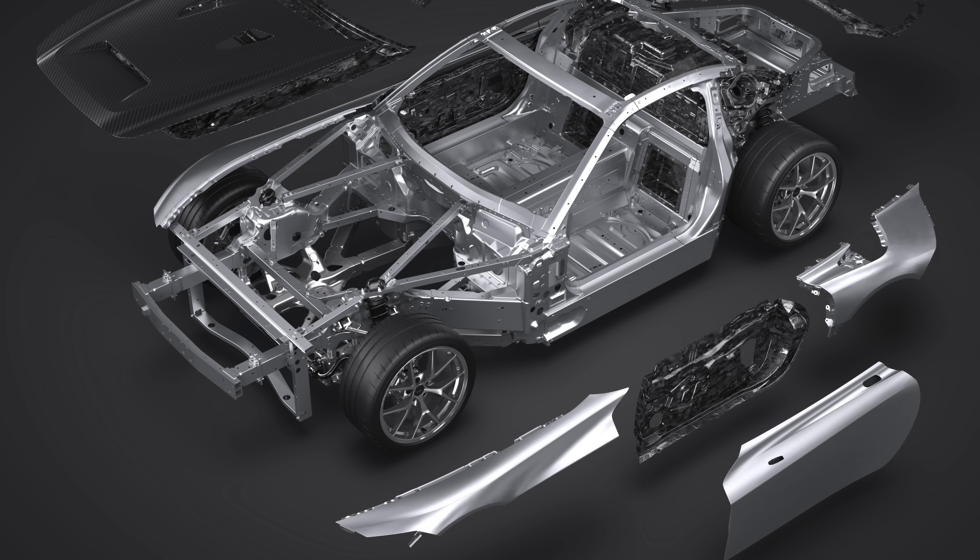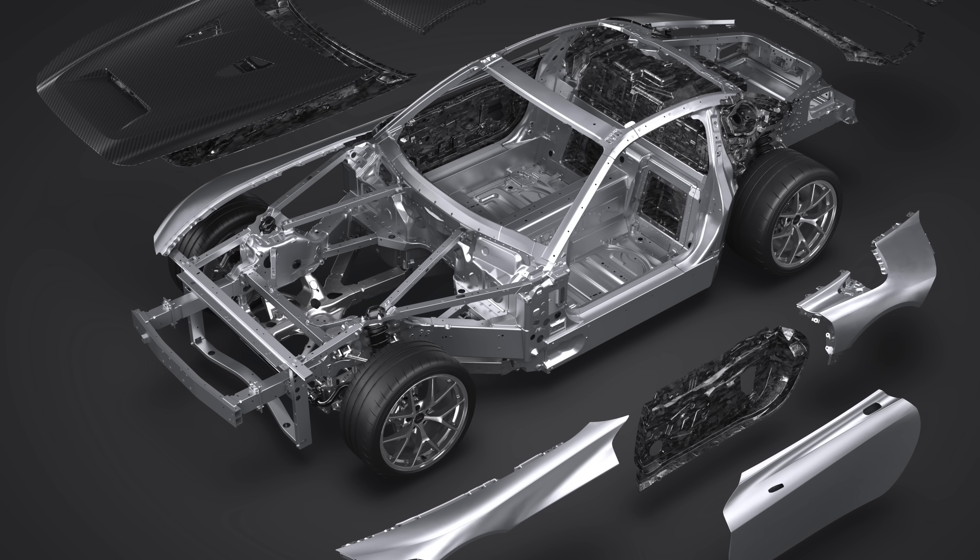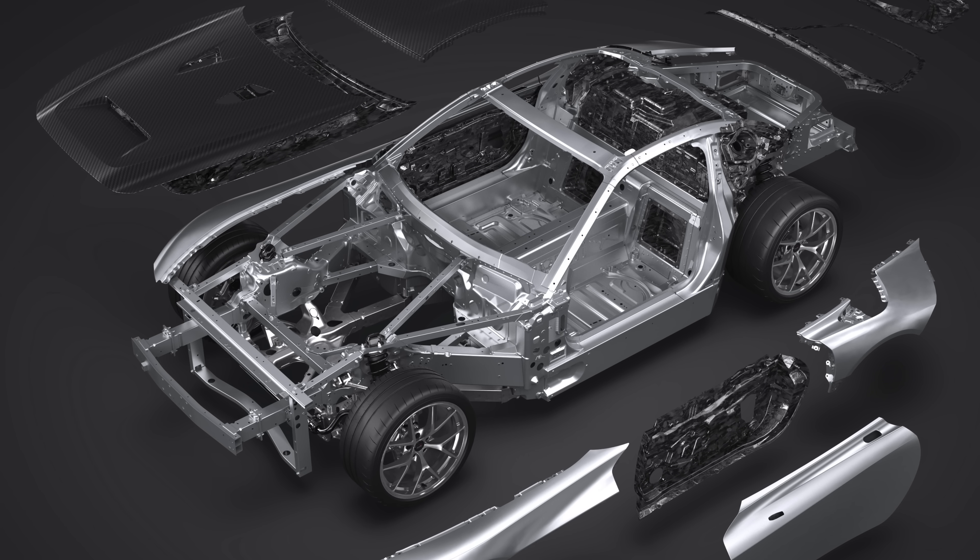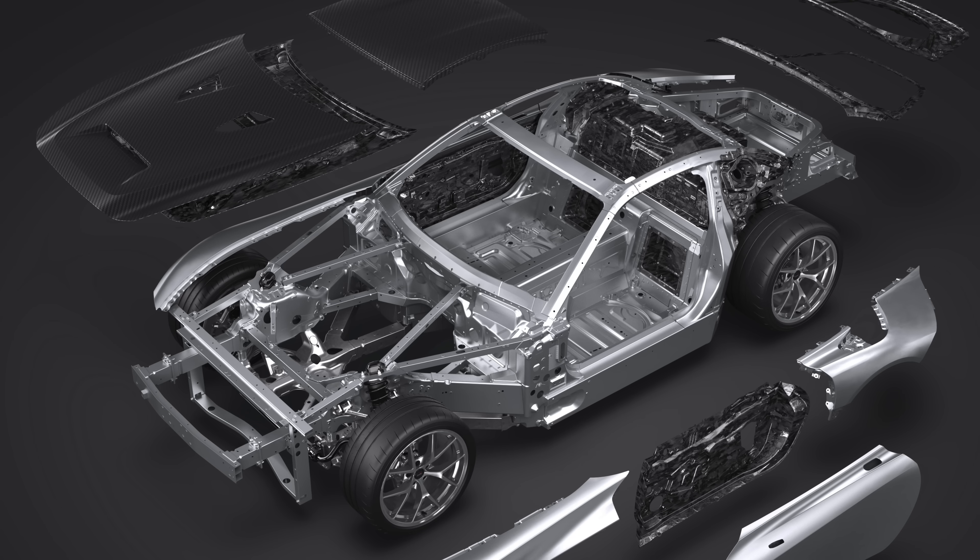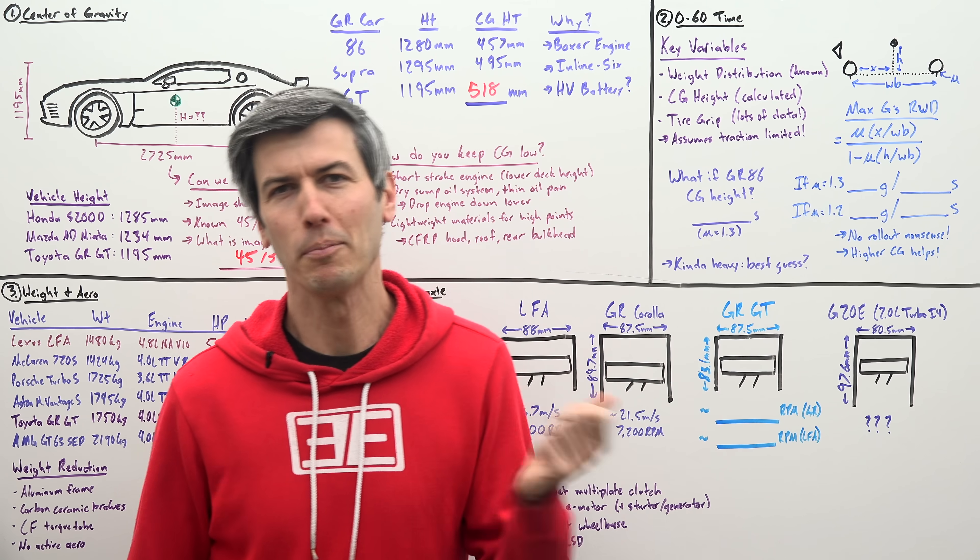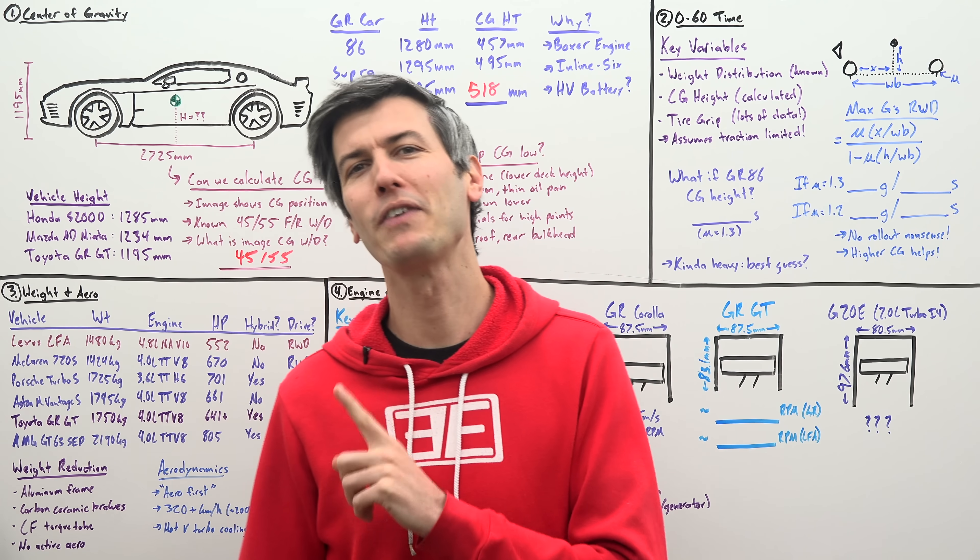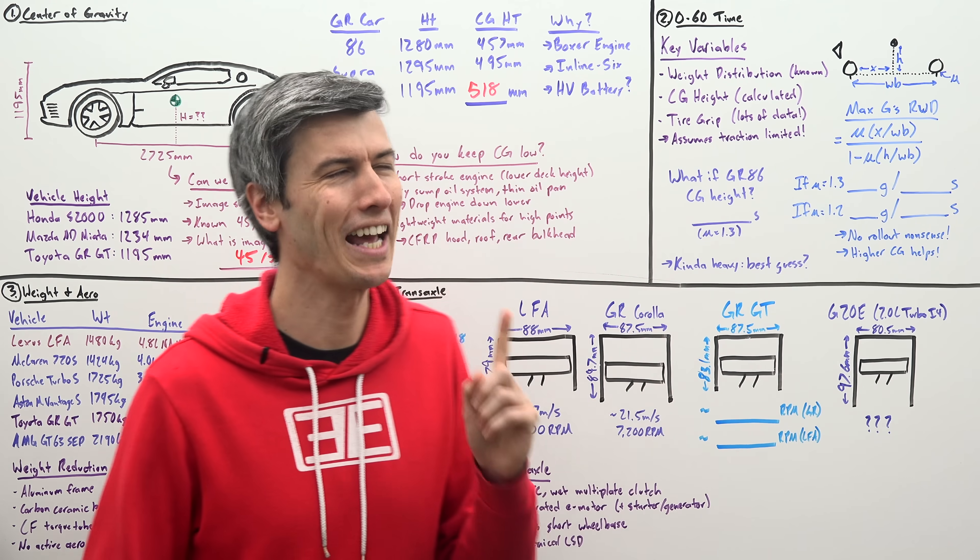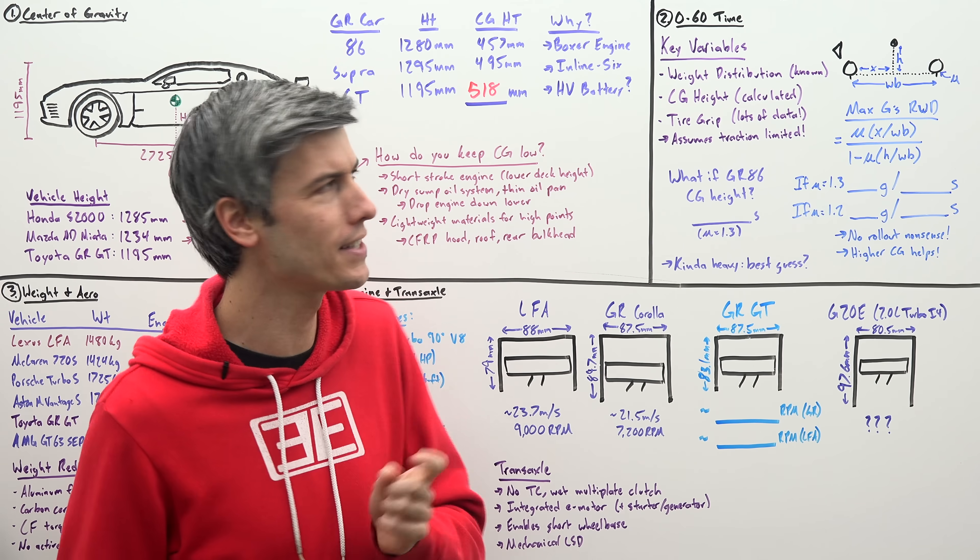The car also makes use of lightweight materials, especially at high points on the vehicle. So you can see carbon fiber used for the hood, for the roof, and for the rear bulkhead, as well as aluminum body panels. All right, but something kind of fun. If we know the vehicle's center of gravity height, we can actually estimate its 0 to 60 time.